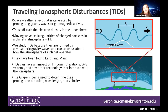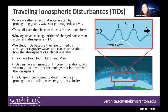Currently, we're using the GRAPEs to determine the propagation direction, wavelength, and velocity of these TIDs. On the right I have a figure showing a zoomed-in version of a traveling ionospheric disturbance, with the horizontal wavelength, propagation direction, and velocity outlined — which is what we're looking to find with the GRAPE.